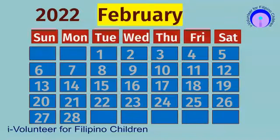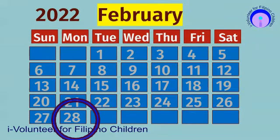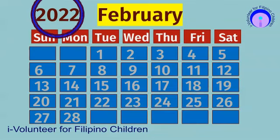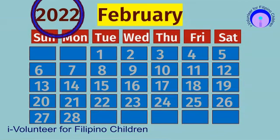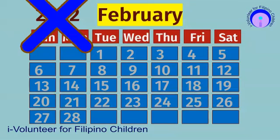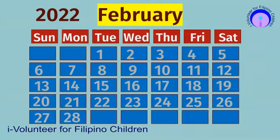This is February, the second month of the year. This is the month where we celebrate Valentine's Day. This is the month that changes its total number of days depending on the year — if it is a leap or an ordinary year. A leap year has 29 days while an ordinary year has only 28 days. If the last two digits are divisible by 4, then it is a leap year. The year 2022 is not a leap year, so February 2022 ends in 28 days.